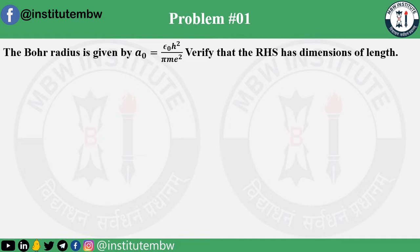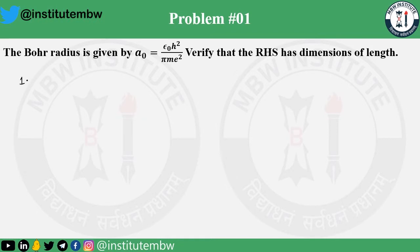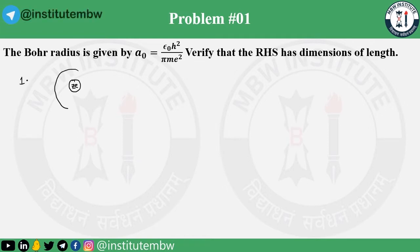To prove the Bohr radius you have to know the Bohr postulates. The first postulate is the same as the Rutherford model: the electron revolves in a circular orbit under the influence of Coulomb attraction. If this is the nucleus — let's say that is Z — and the electron is revolving in a circular orbit, let's say this is the electron, and let us assume this radius is R.